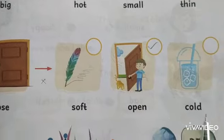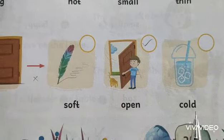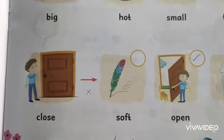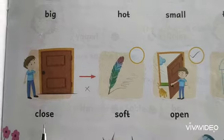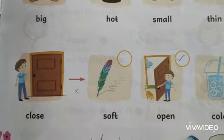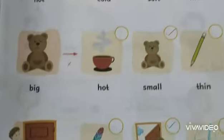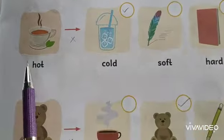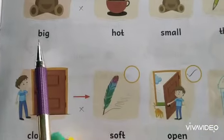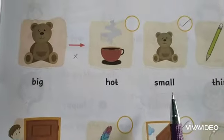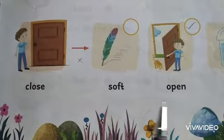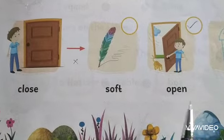The third picture shows cold, but this is not related to the word close. So today we are getting three opposite word pairs: hot and cold, big and small, close and open.